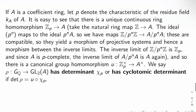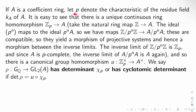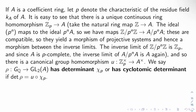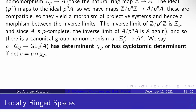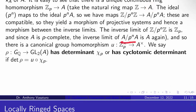Now, the determinant of a Galois representation. Let A be a coefficient ring, and let P denote the characteristic of the residue field K_A of A. It's easy to see there's a unique continuous ring map from Z_P to A. The map is: there's a natural ring map from Z to A; the ideals generated by P^N map to ideals P^N A; so we get maps Z mod P^N Z → A mod P^N A. These are compatible and yield a morphism of projective systems, hence a map between inverse limits: Z_P → A, since A is already P-complete.